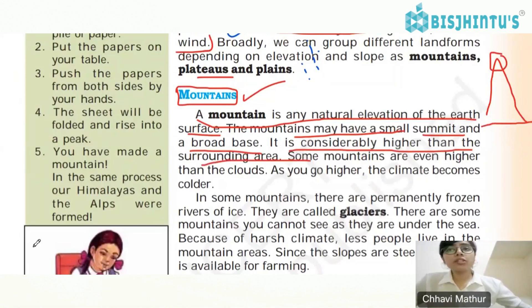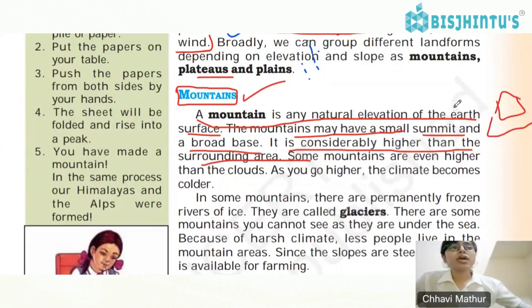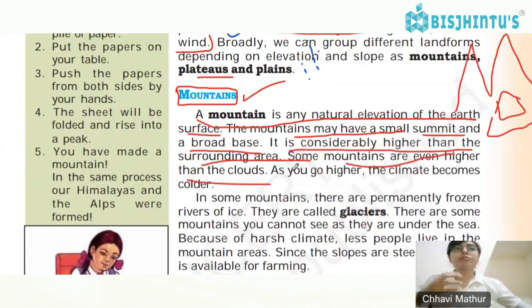Mountains are considerably higher than the surrounding area. For example, if you have houses or gardens around, you will see that mountains are at a greater height and are elevated compared to those surroundings.